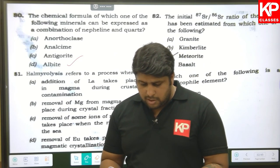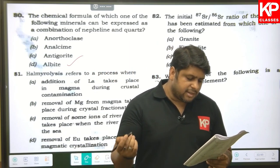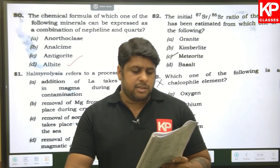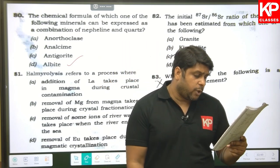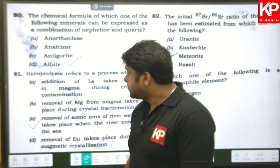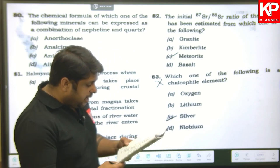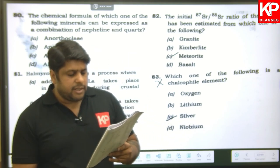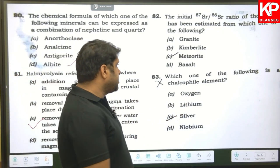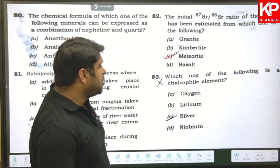Question eighty-one: halmyrolysis refers to a process related to water — specifically the removal of some ions from river water when the river enters the sea. So option C is correct. Question eighty-two: the initial ⁸⁷Sr/⁸⁶Sr ratio of the Earth has been estimated from which meteorites? C is the right answer. Question eighty-three: which is a siderophile element? The answer is silver.